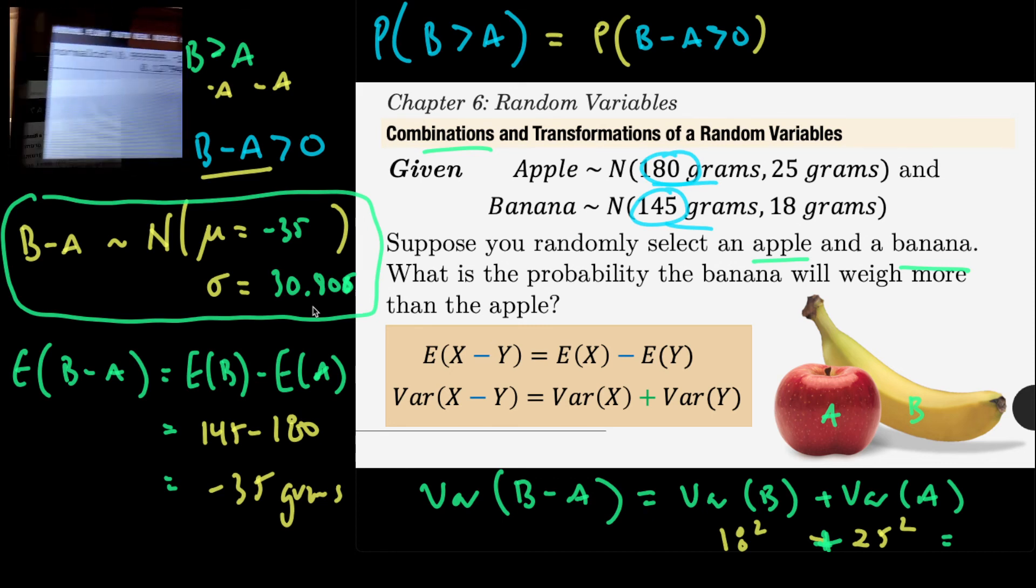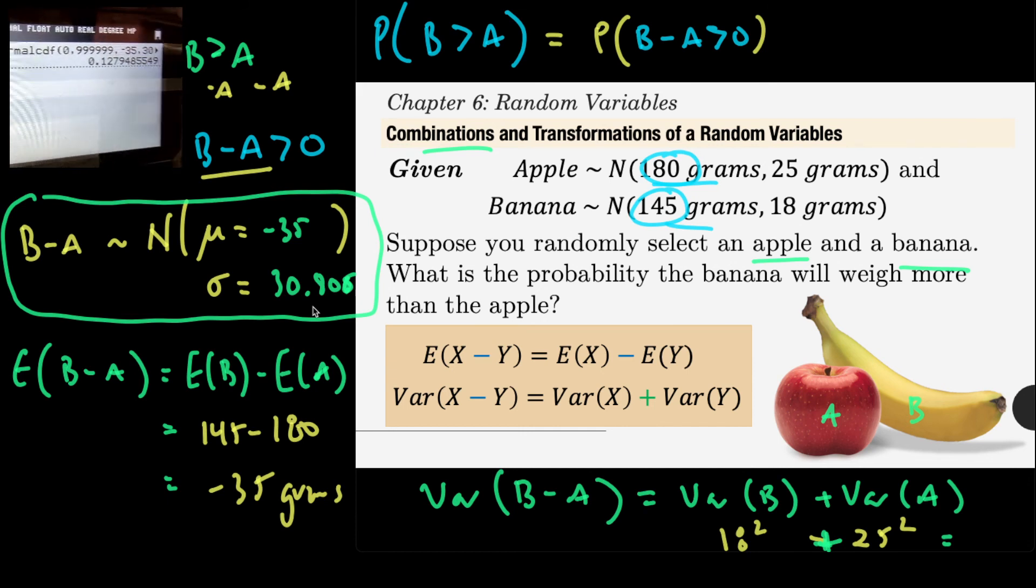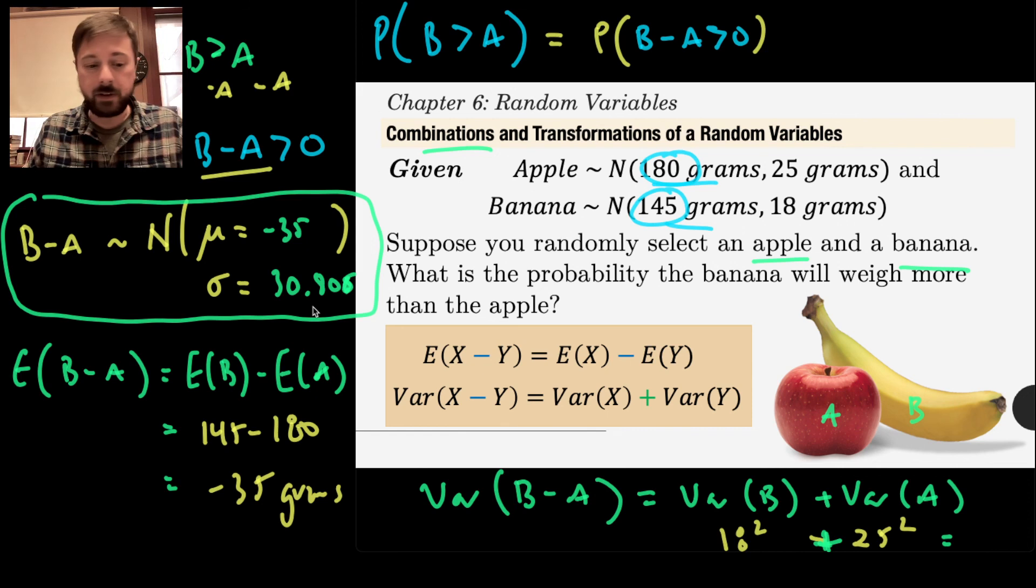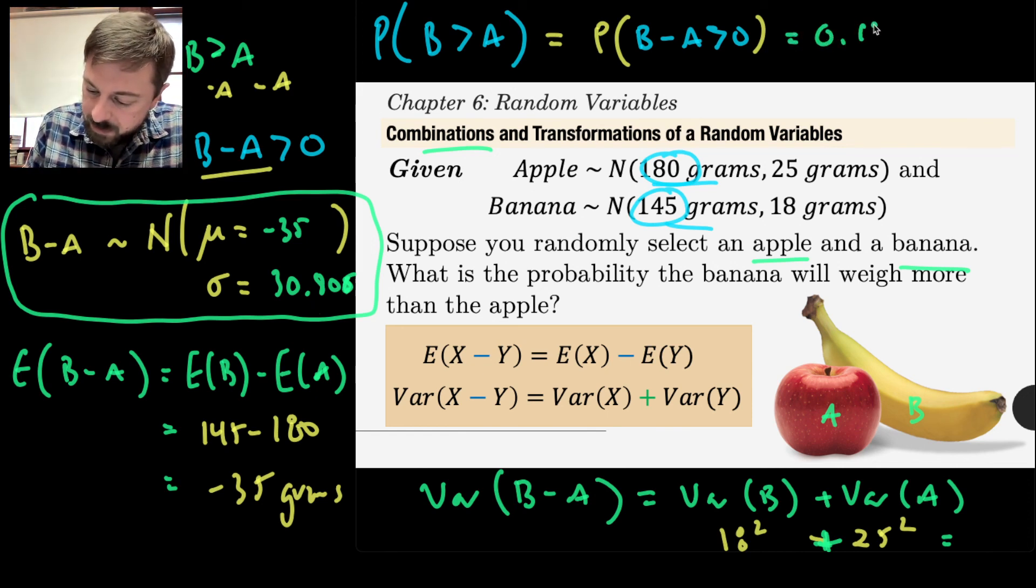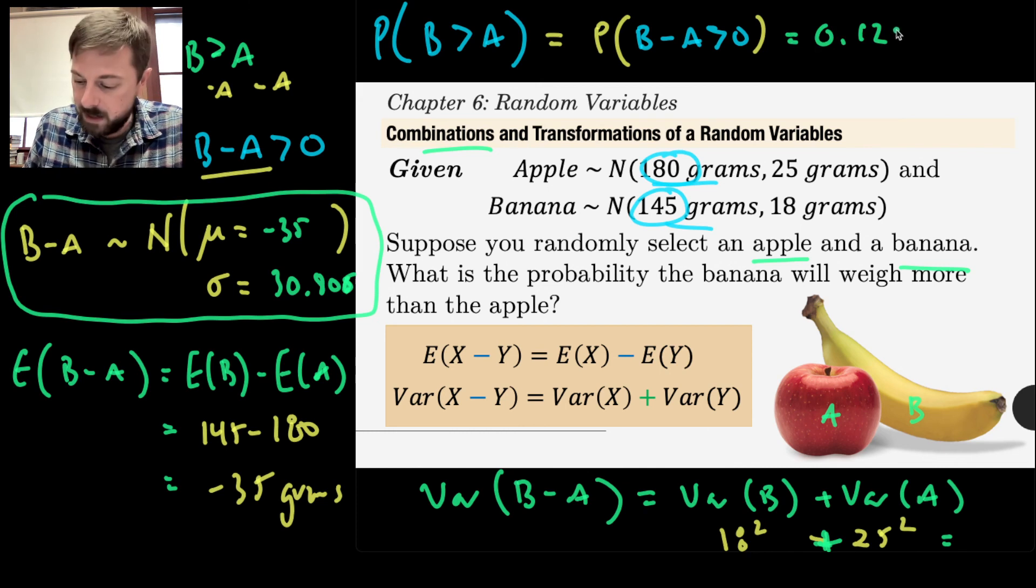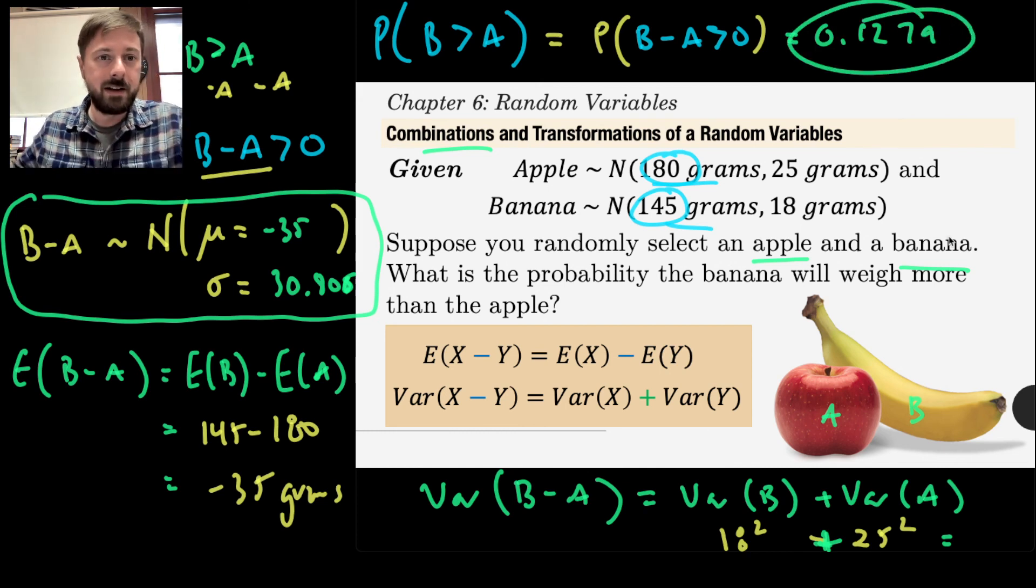And voila, you can look at the calculator there and you can see we have a probability of about 12.79% or so. And that's our answer. Based on these facts, the probability that you pick a banana at random that ends up being bigger than a randomly selected apple of whatever this variety is, 12.79%. Is that cool? All right. So yay.